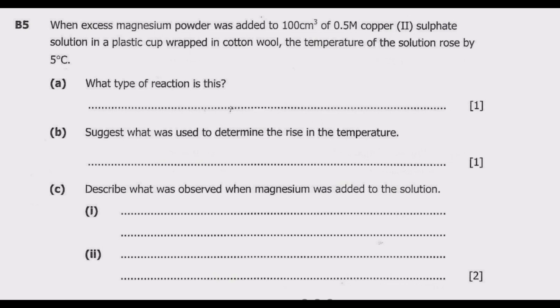Question B5 reads: When excess magnesium powder was added to 100 cm³ of 0.5 M copper sulfate solution in a plastic cup wrapped in cotton wool, the temperature of the solution rose by 5°C. What type of reaction is this? The temperature is increasing because we are told the temperature rose by 5°C.